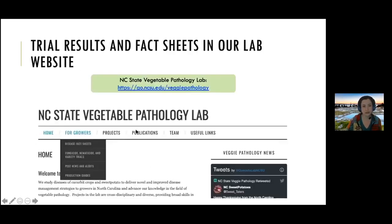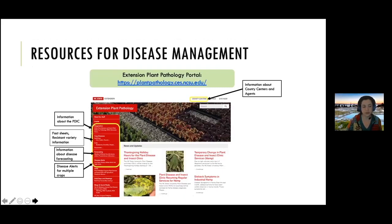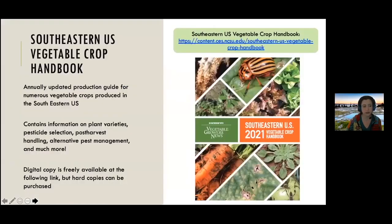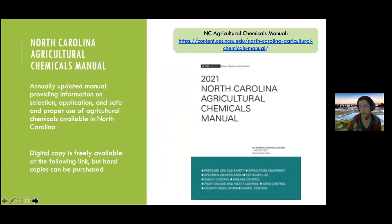Everything from my lab is posted on our website — it's freely available, with a tab called 'For Growers' where you can find disease fact sheets, fungicide and variety trial results, and production guides. There are also resources in the portals, and the clinic. We collaboratively update recommendations in a multi-state handbook, which is reflected in the North Carolina Ag Chem Manual as well.